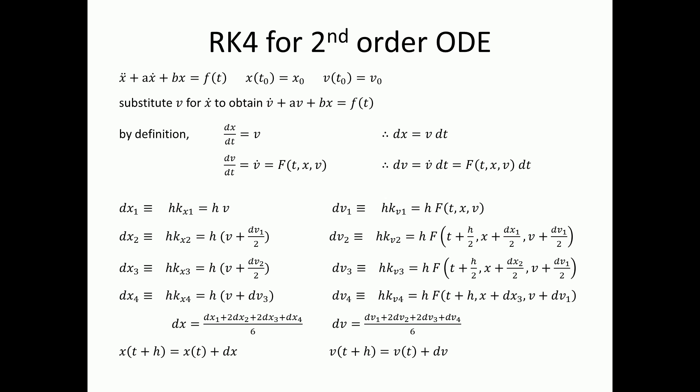By definition, speed is the slope of x. Speed is the slope of position. So therefore, the change in position is slope times the time step. And then v dot is the slope of v, and we can manipulate the differential equation to get the slope of v as a function of time, position, and velocity. In our case, that would be f of t minus av minus bx. And then you just repeat the Runge-Kutta method for x and v.